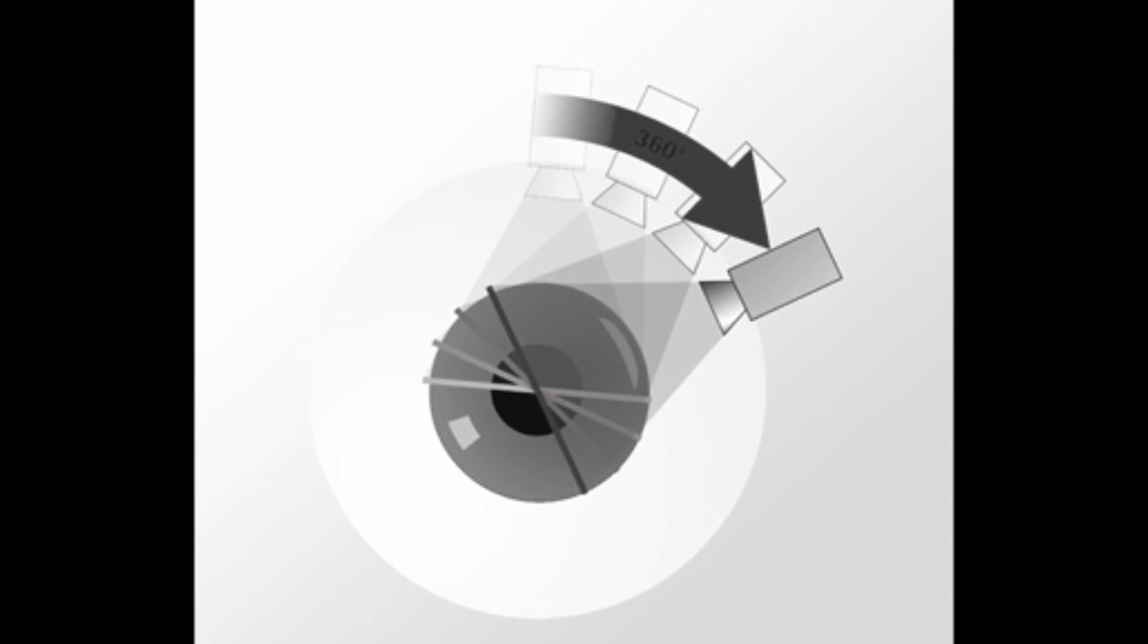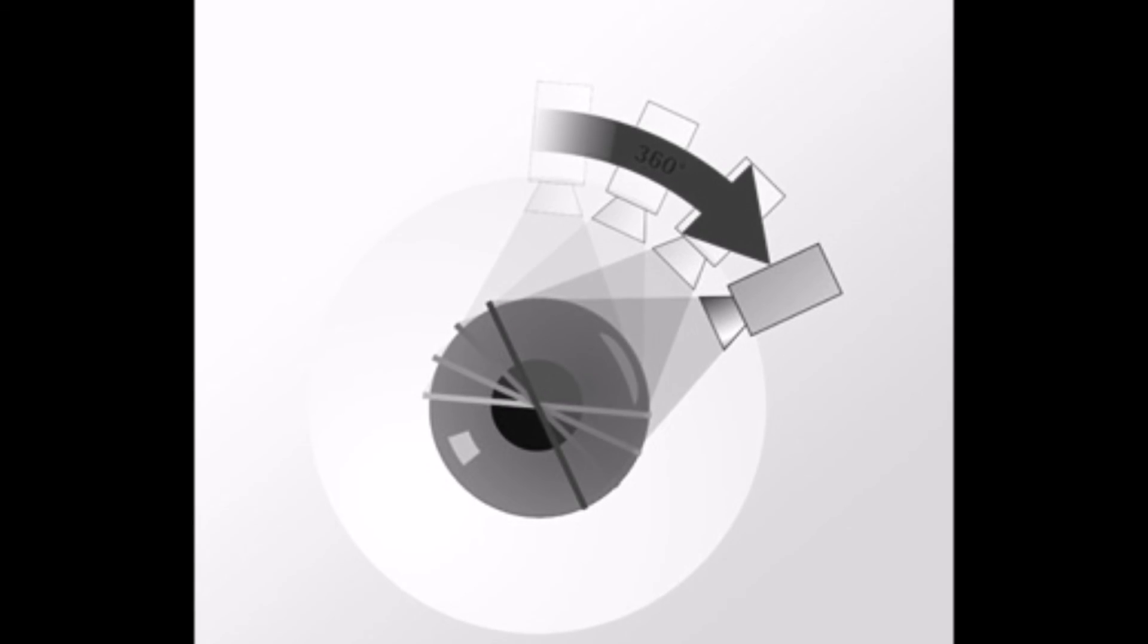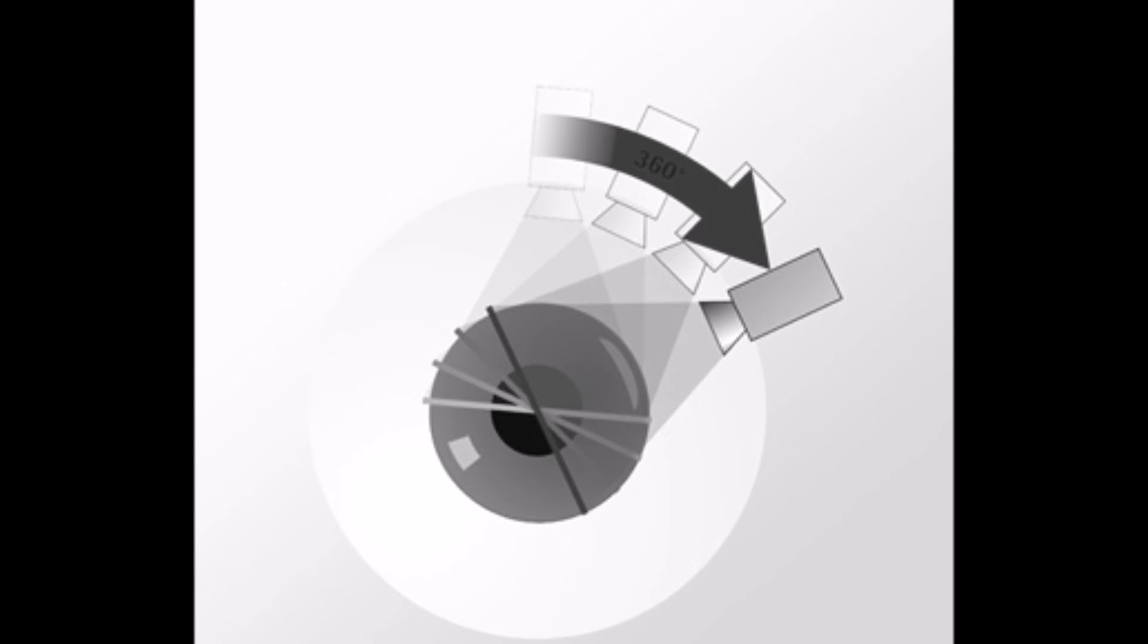A second camera, the pupil camera, is used to detect any saccadic eye movements. This information from the second camera can then be used to adjust for measurements recorded by the slit Scheimpflug camera.